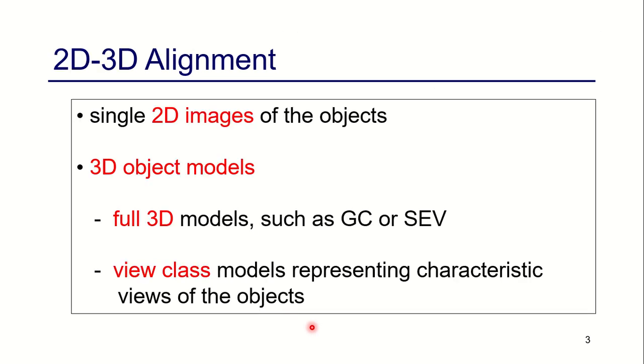Single 2D images of the objects are collected and they are used for modeling the 3D objects. So this is done in the 2D-3D alignment. Full 3D models such as CAD can be used.